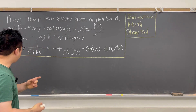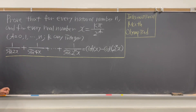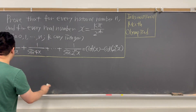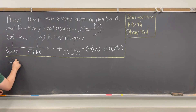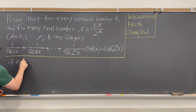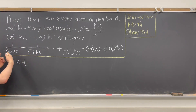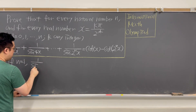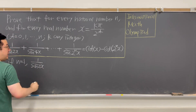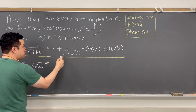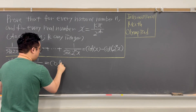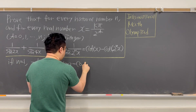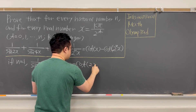To simplify everything, let's first consider when n equals 1. So if n equals 1, then the left-hand side is only 1 over sin(2x), and it should equal cotangent x minus cotangent(2x).